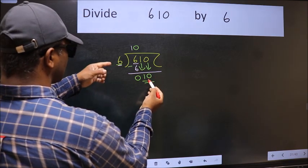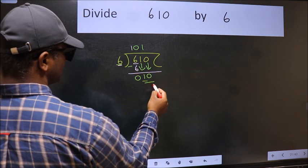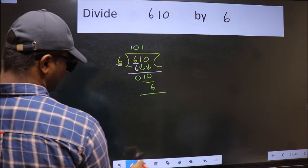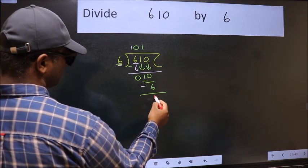A number close to 10 in the 6 table is 6. 6 times 1 is 6. Now we should subtract. We get 4.